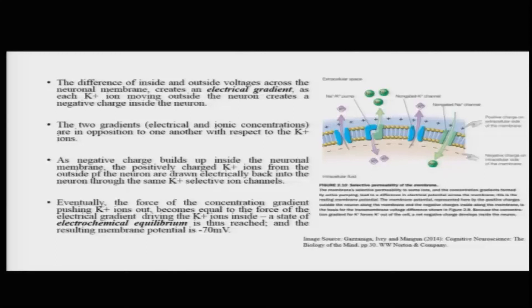This difference created between the inside and outside voltages across the neuronal membrane is referred to as an electrical gradient. There are two kinds of gradients: the electrical gradient forming because of the difference in charge, and the ionic concentration gradient forming because of the difference in concentration of specific ions. These two gradients are in opposition to each other — if the ionic gradient wants equilibrium to be established, the electrical gradient gets disturbed. One sends potassium ions outside, the other wants potassium ions inside.